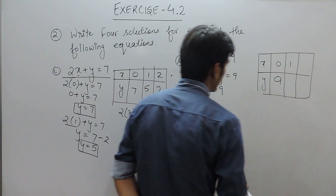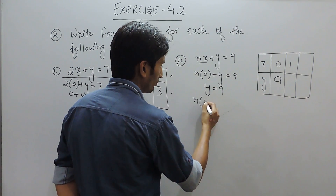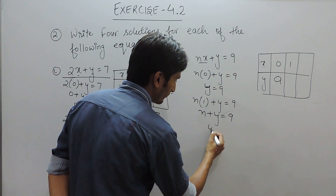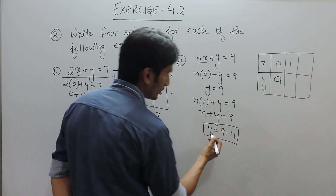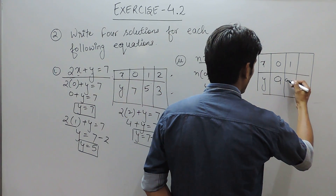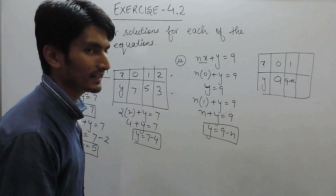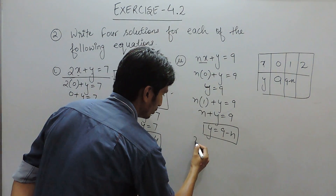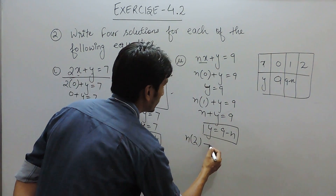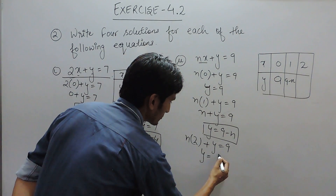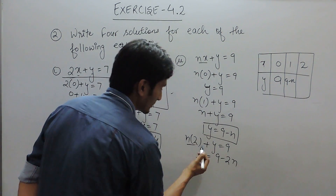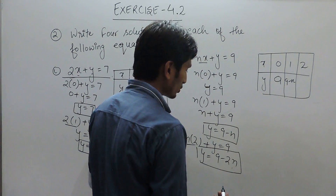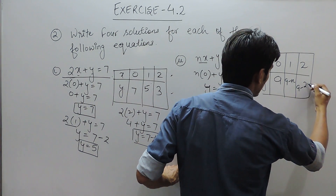Putting x equal to 1: n into 1 plus y equals 9, so n plus y equals 9, meaning the value of y is 9 minus n. When you put x equal to 2: 2 into n plus y equals 9, so the value of y must be equal to 9 minus 2n, because 2n shifts to the other side as minus 2n.